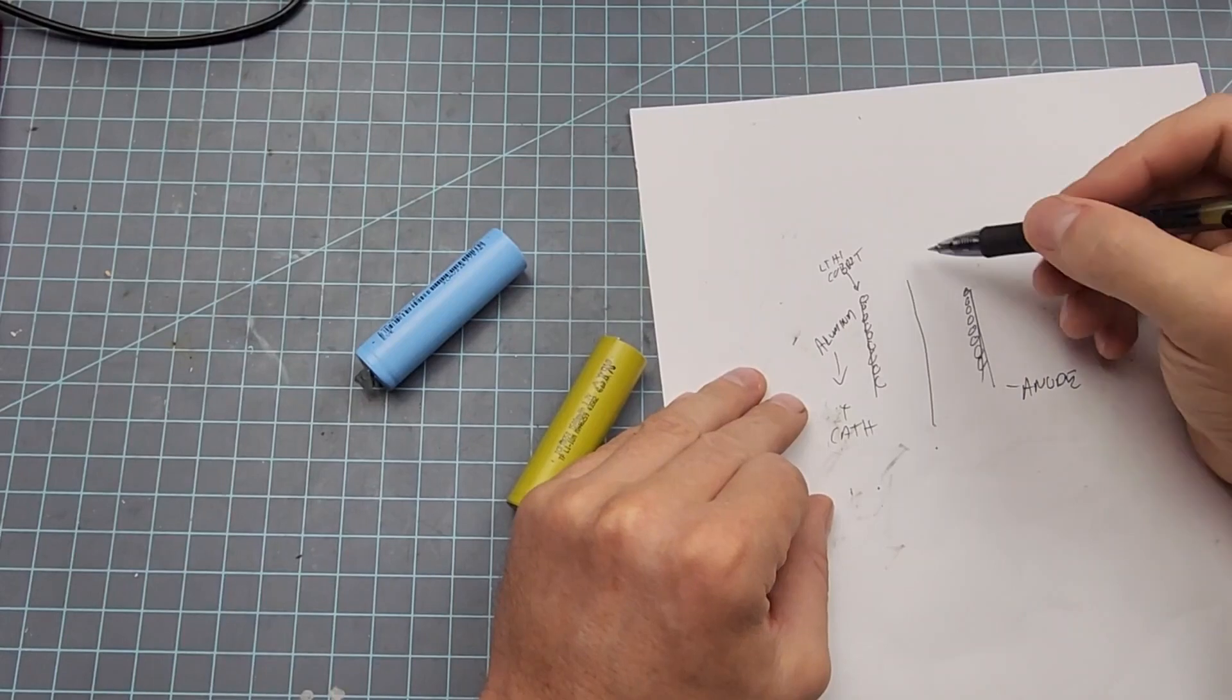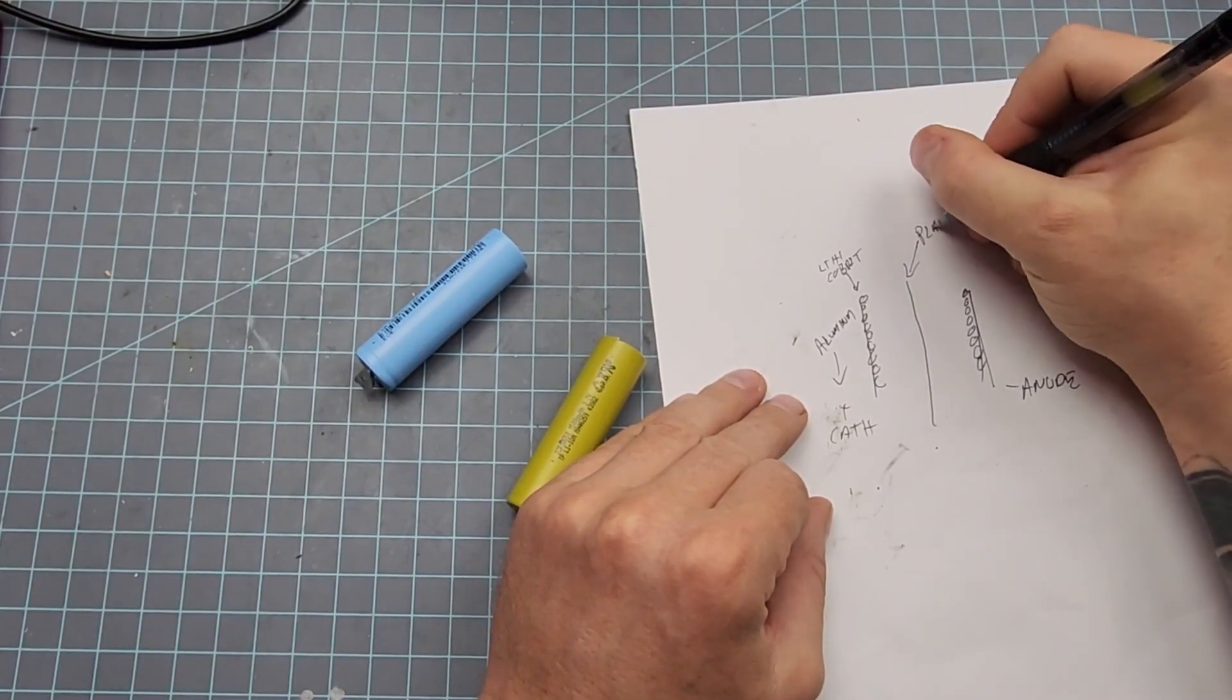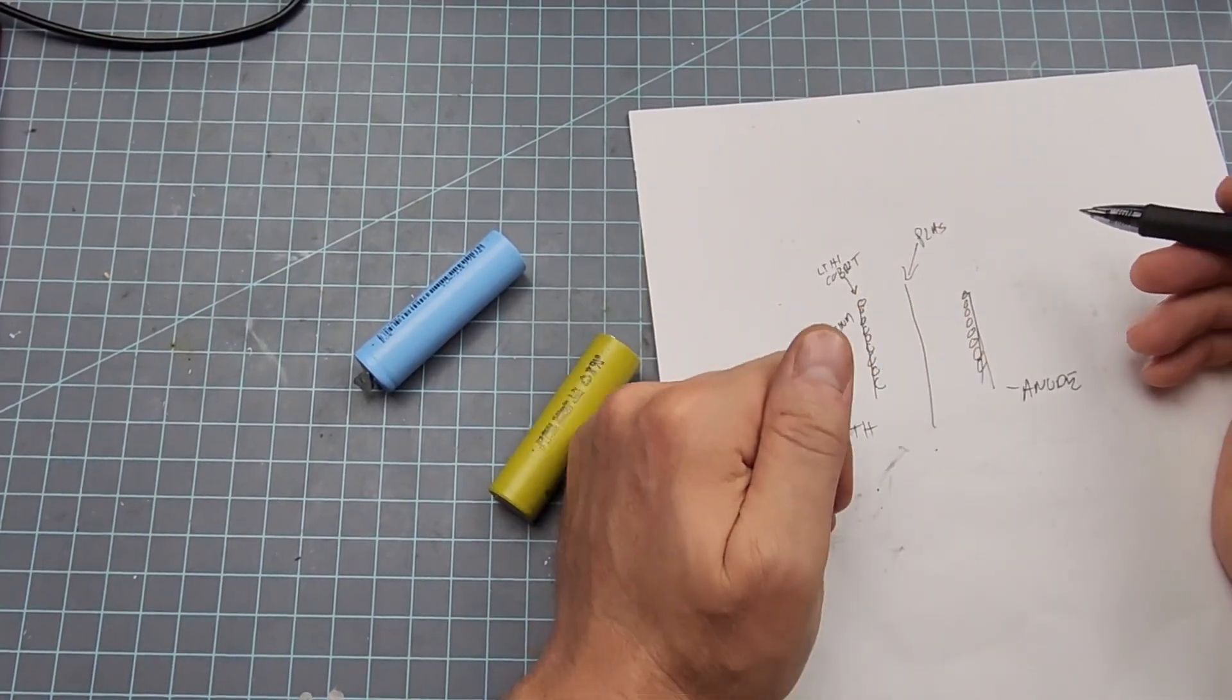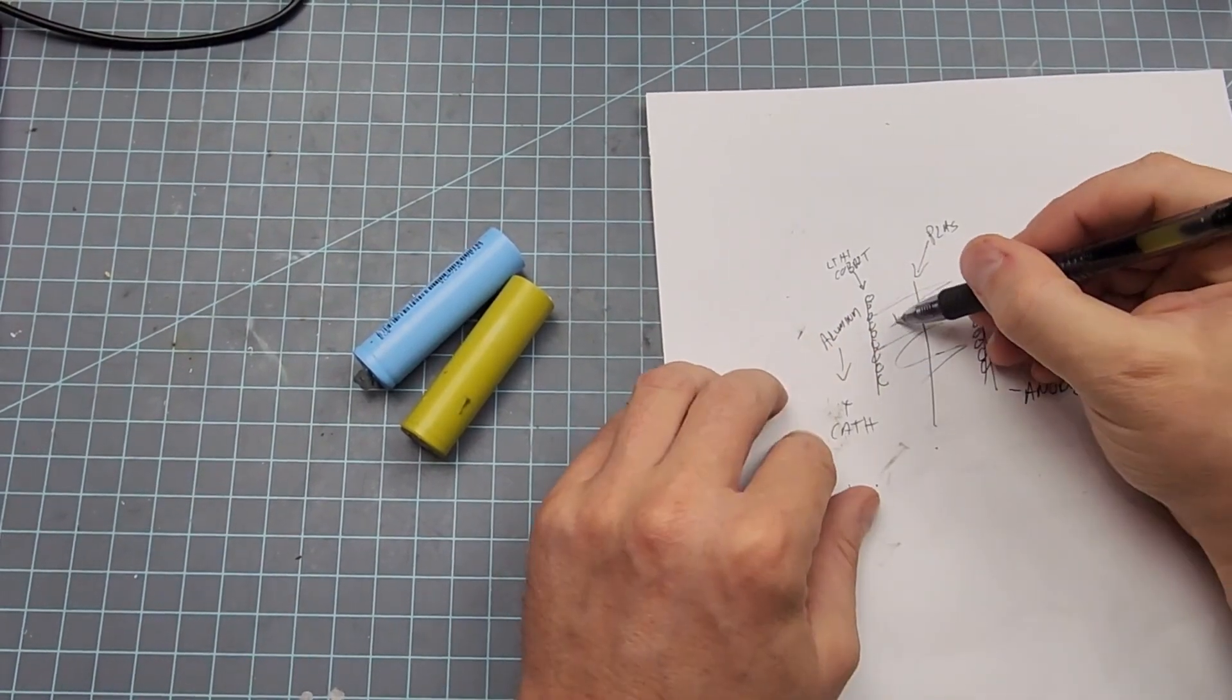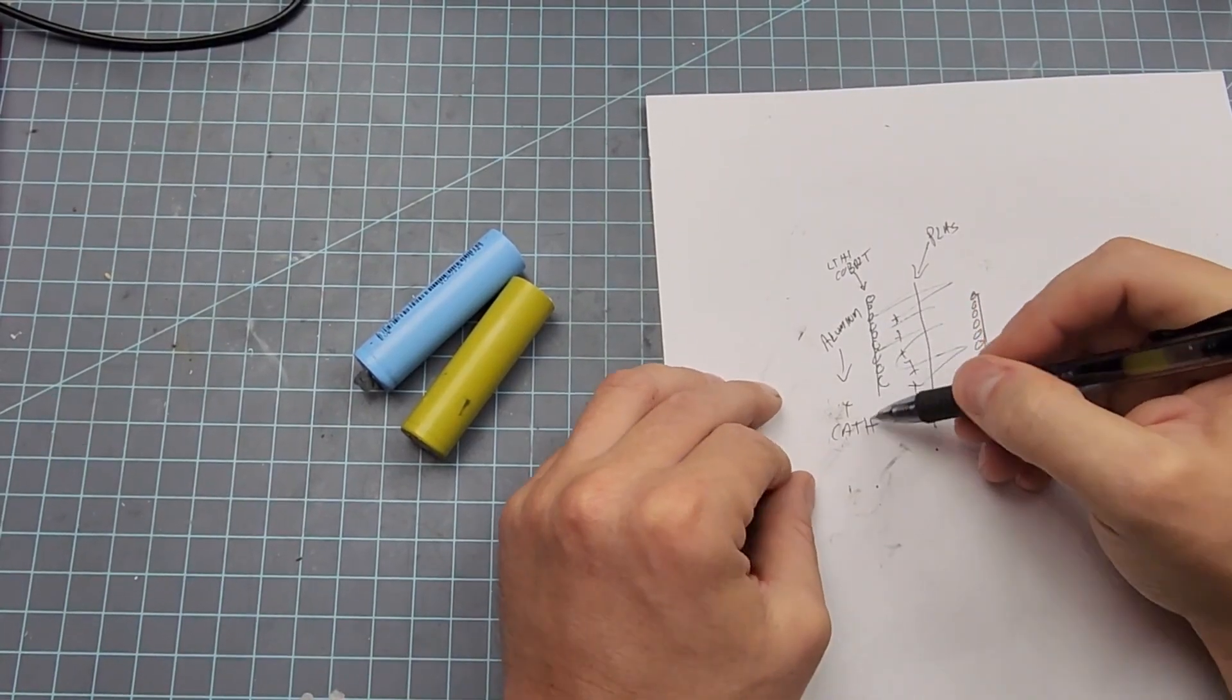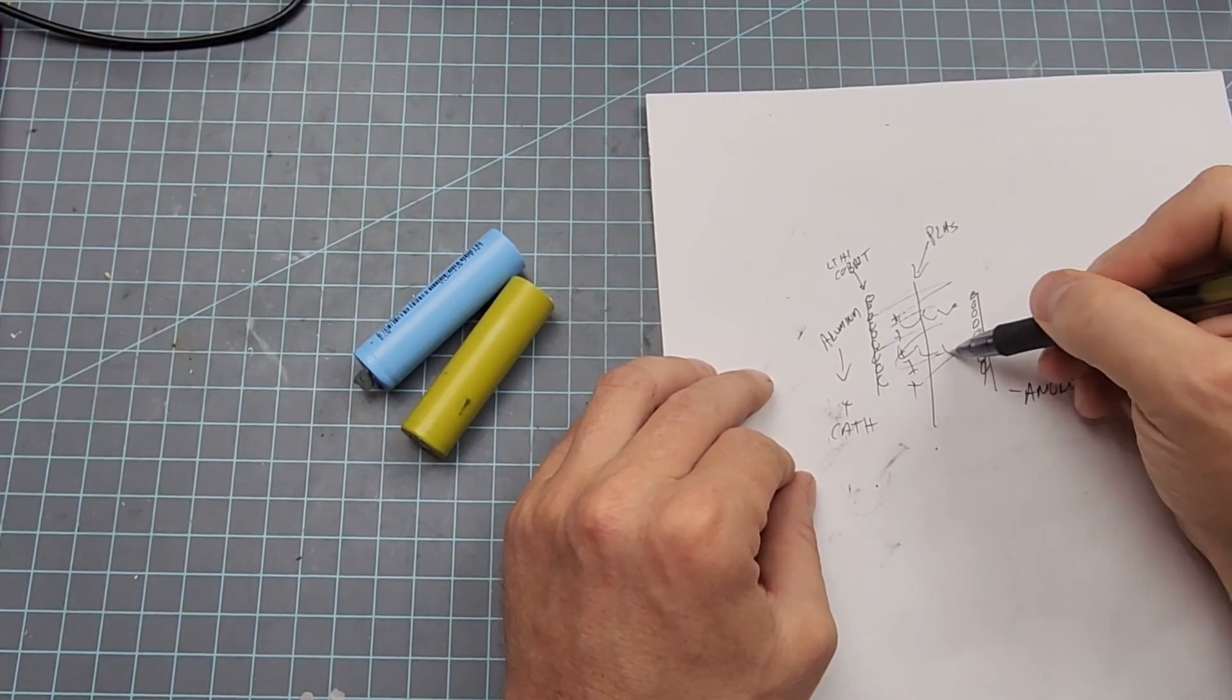Now in the middle, there's normally some kind of plastic sheet that separates the two. And then you have this electrolytic compound with lots of little positive lithium ions floating around in it, ready to do work.